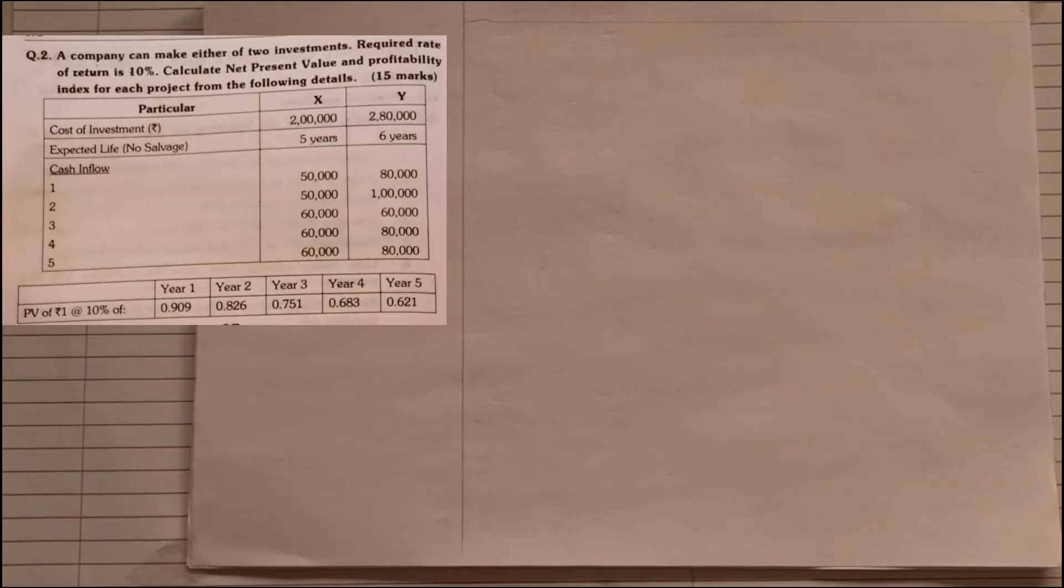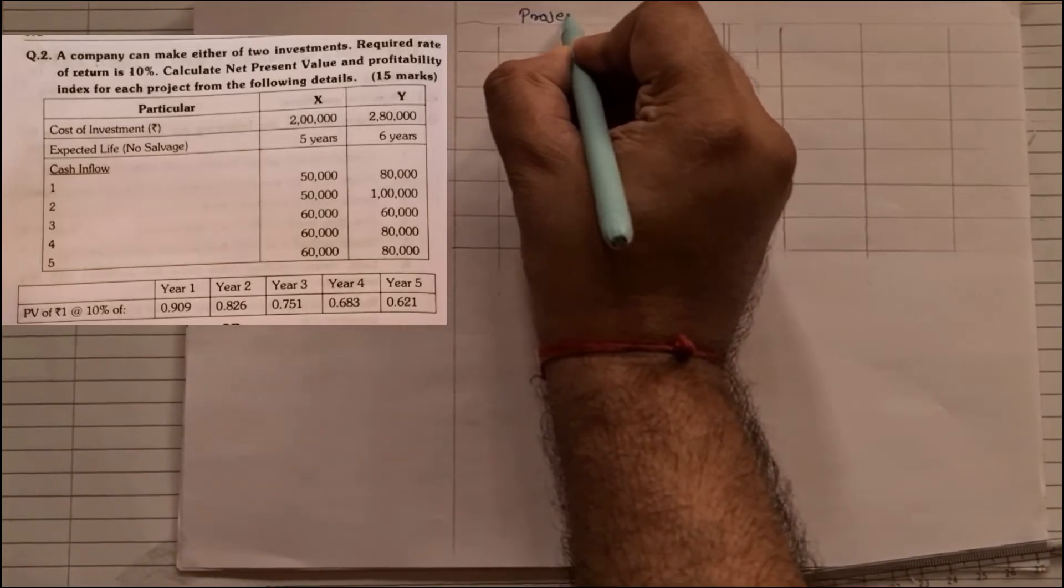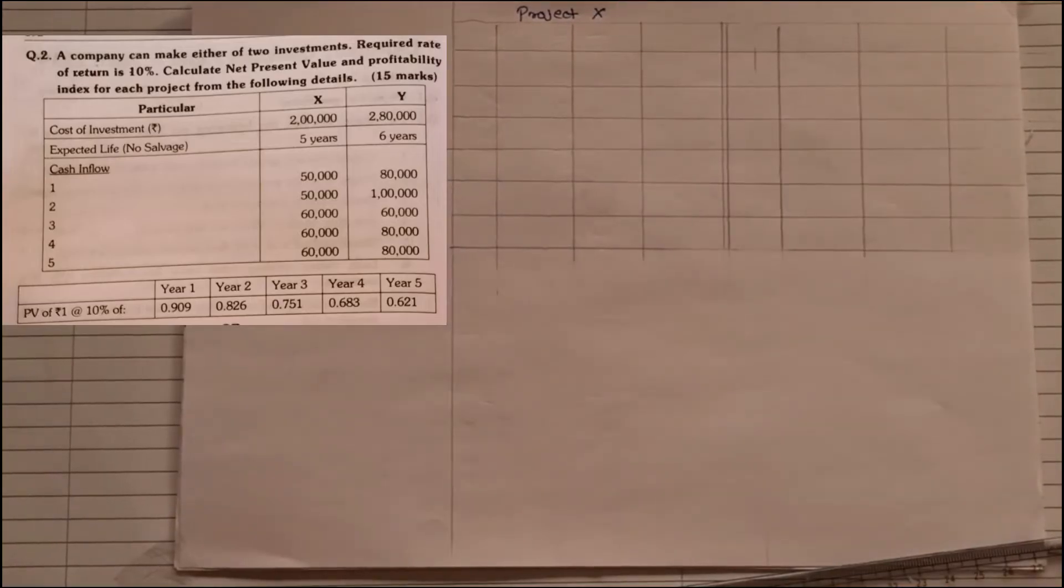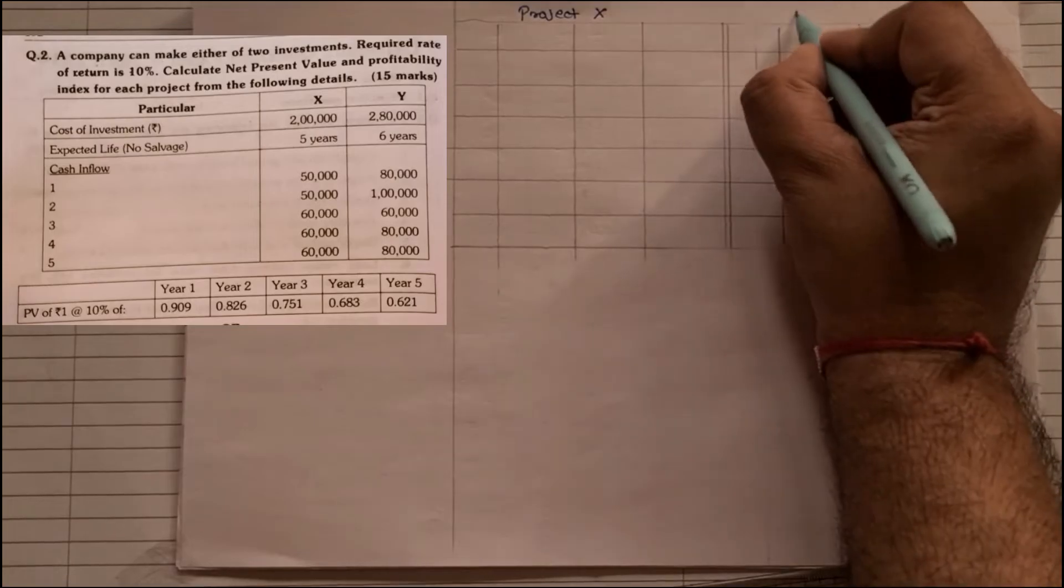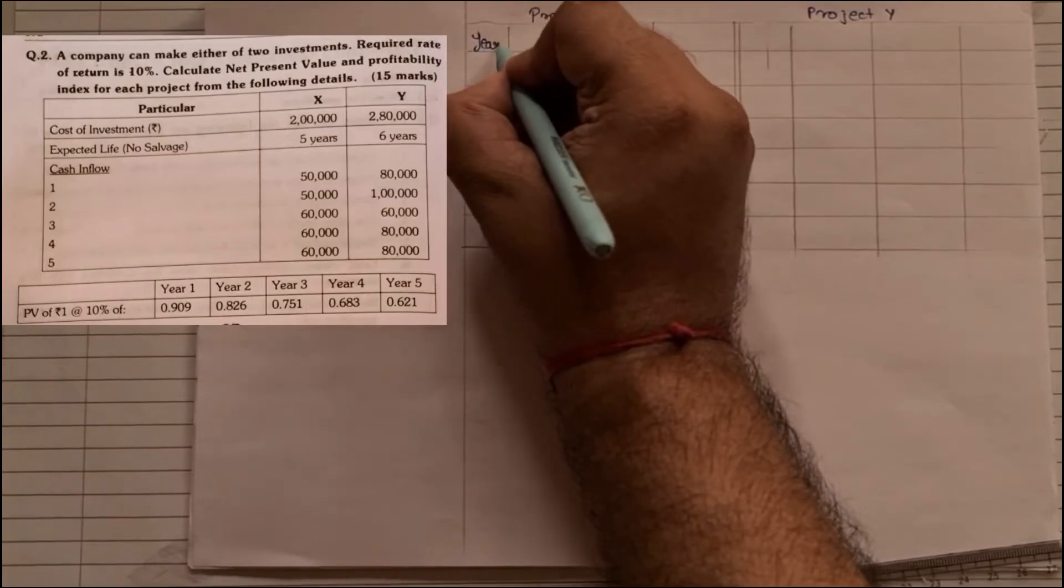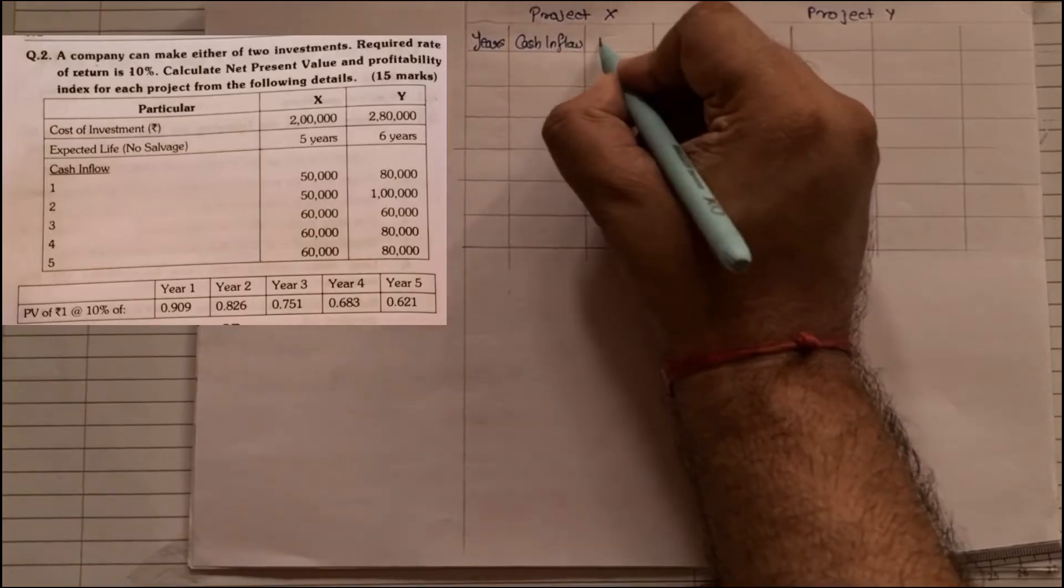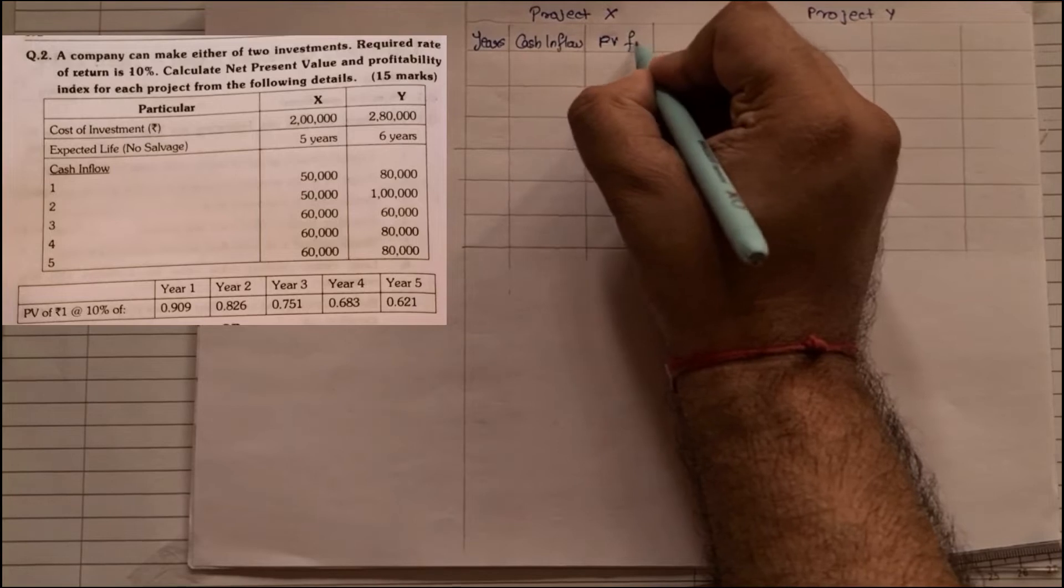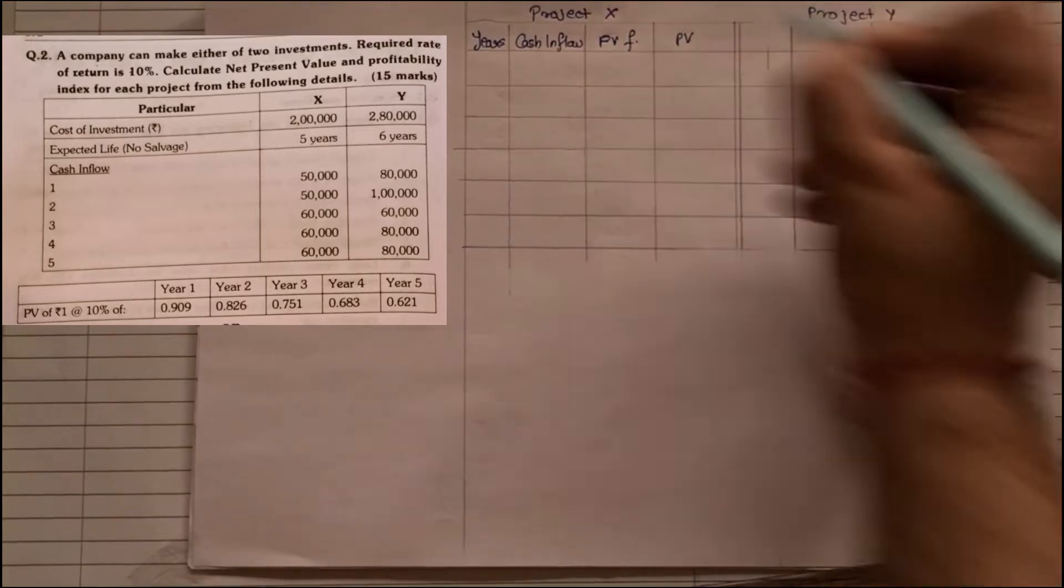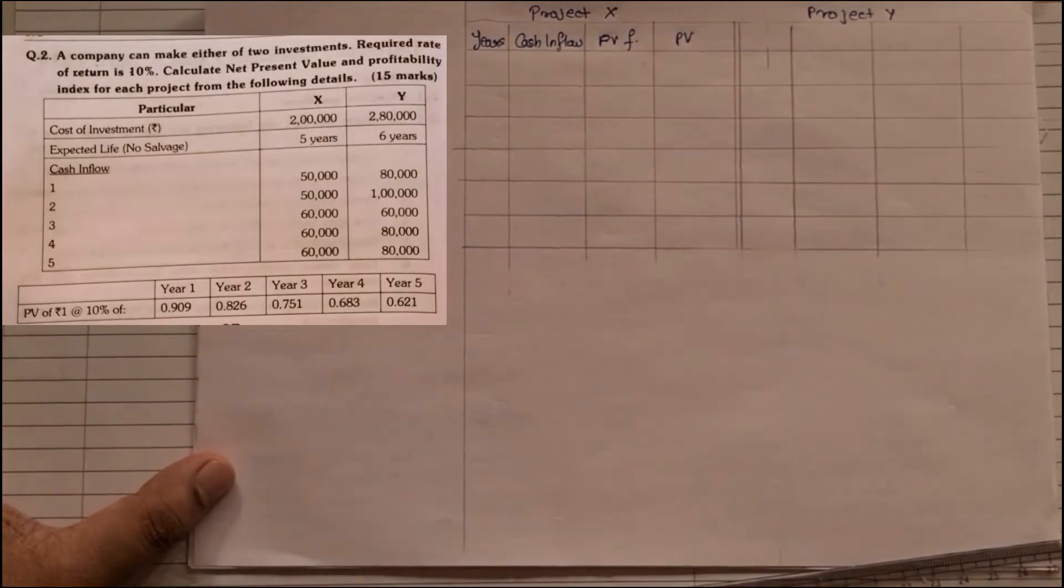Now let us see how to solve such kind of sum. They ask you to find two things: profitability index and NPV. First what I'll do is I will construct the table and then I will start with the solving part. This is my project. There are two projects in the sum, so we have project X and we have project Y.